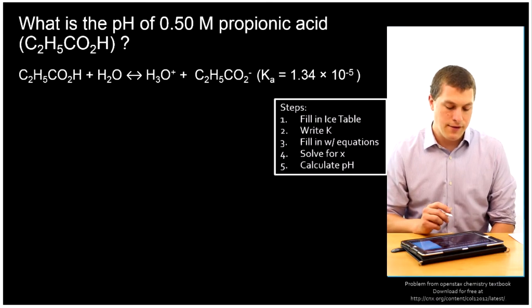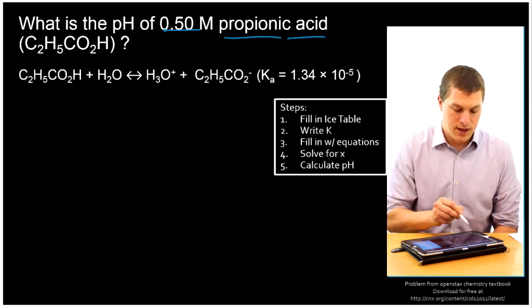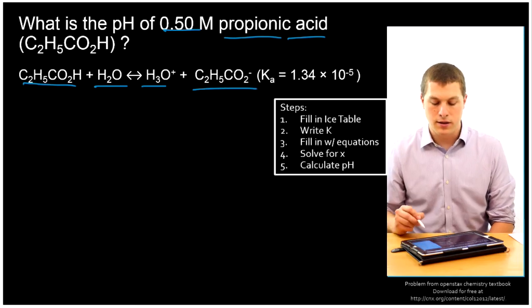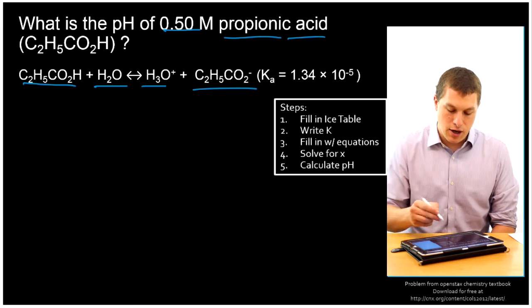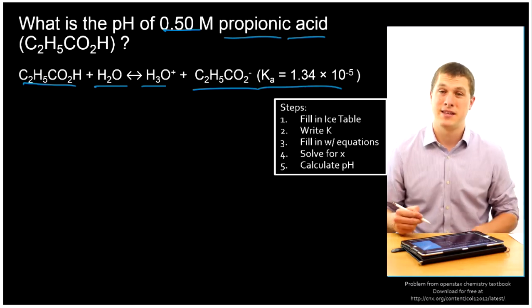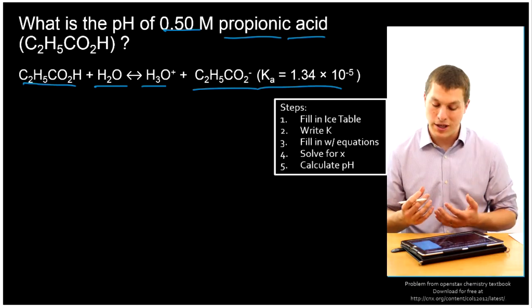So here we have 0.5 molar propionic acid. And we combine our propionic acid with water, we get hydronium ions and our conjugate base, the leftover ion there. And it also gives us an equilibrium constant, 10 to the minus 5th. That means that we don't have a ton of products. And that means this is definitely a weak acid.